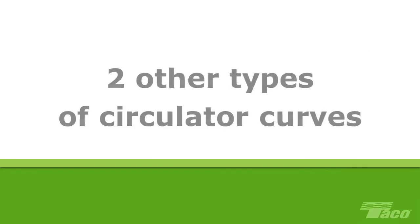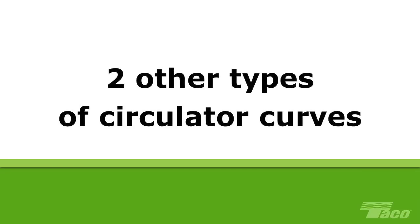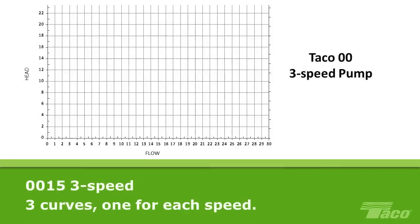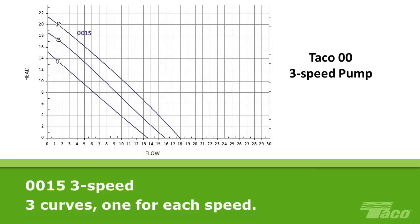That covers fixed-speed circulators, but we also need to look at the curves of two other types of circulators used in residential jobs. The first is the 3-speed pump. This curve is for the Tayco 0015 3-speed cartridge circulator. The curve for a 3-speed pump actually consists of three separate curves, one for each of the pump's speed settings. The pump can operate on any one of these curves, but not between them.